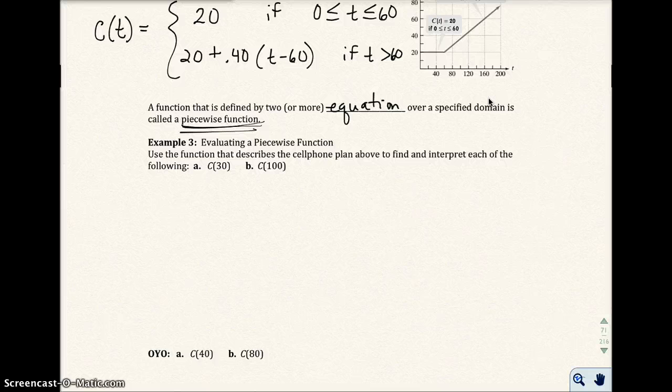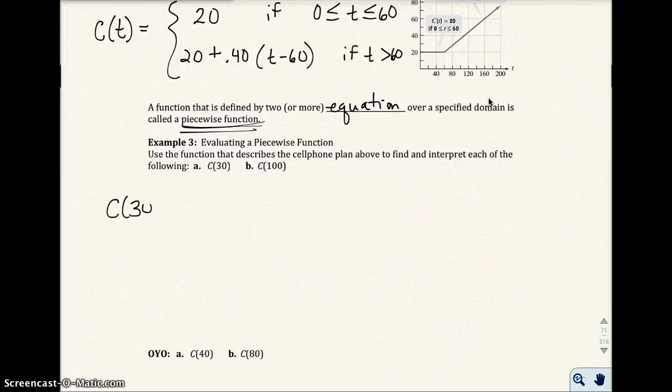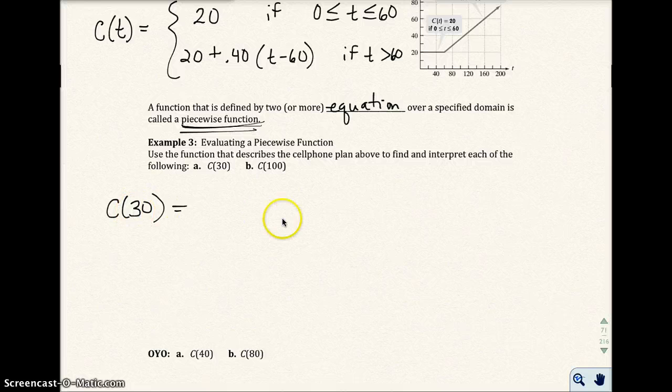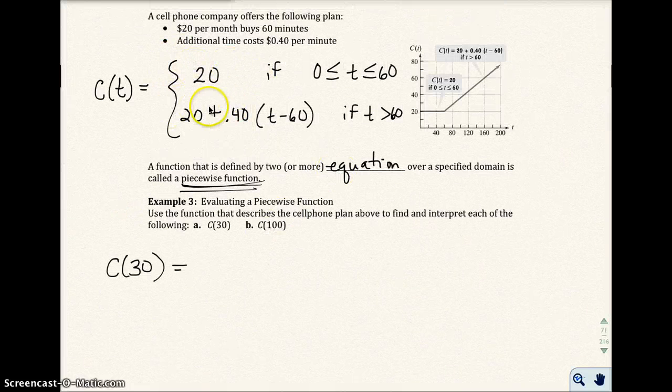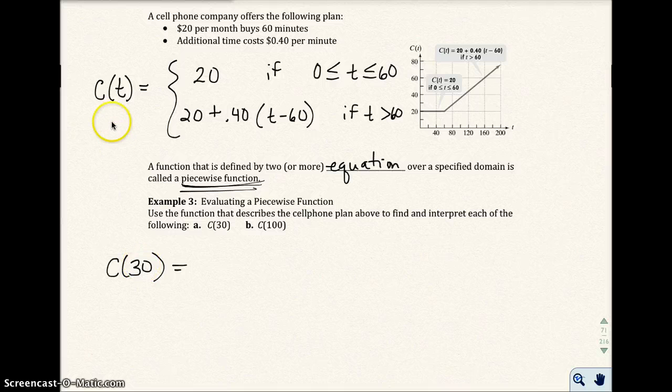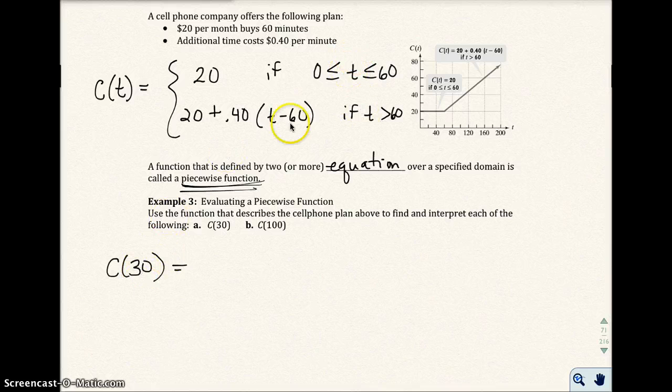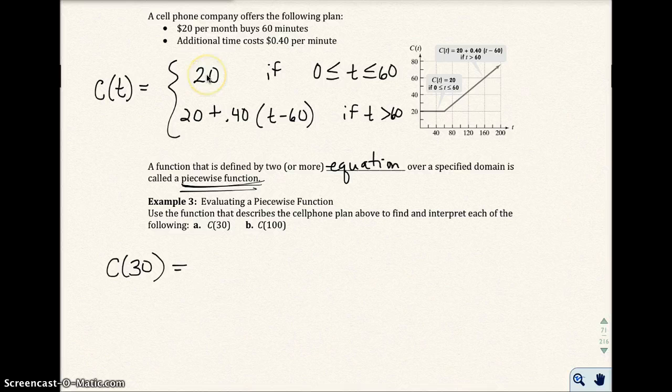Use the function that describes the cell phone plan to find the cost of 30 minutes. If the cost of 30, the time is 30 minutes. You have two options. That 30 is your t-value. 30 is between 0 and 60, so I'm going to use this function, and it's just going to be $20. Which should make sense—if I only use 30 minutes, it should only cost me $20.